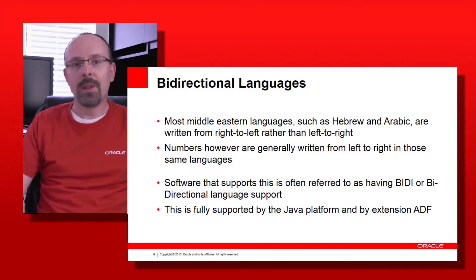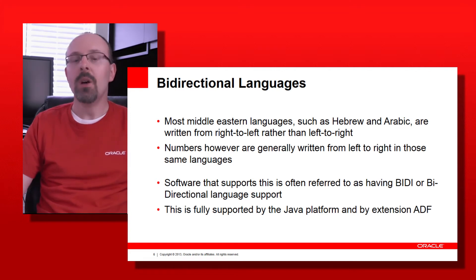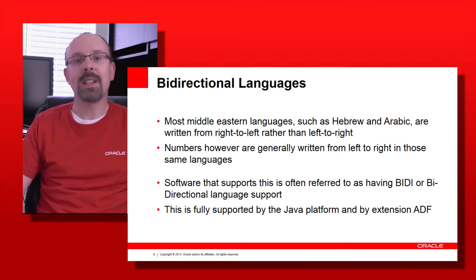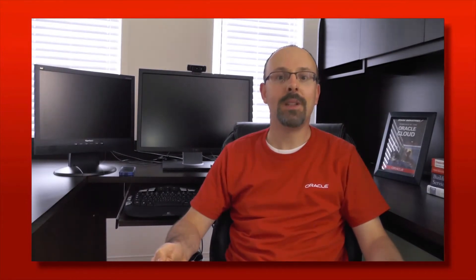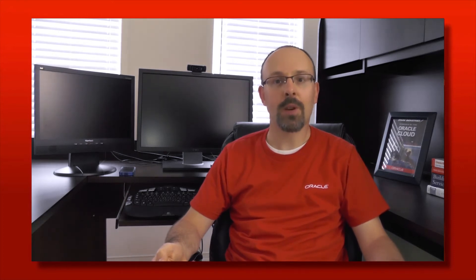There is also a very important thing you need to take into account if your system, website, or application targets the Middle East. Most Middle Eastern languages are written from right to left, but figures in those same languages are written from left to right, exactly like English or French. Software that supports this is often referred to as having bidirectional support. This is fully supported by the Java Enterprise Edition platform and, by extension, ADF.